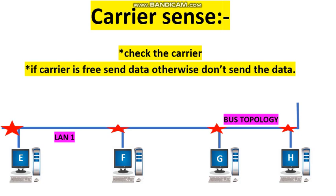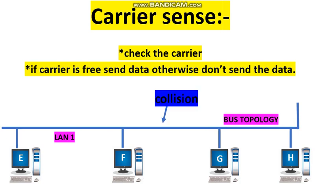For example, let us assume that E is your house and the lines attached to E indicate roads. You can see the traffic on the road only to some extent. In the same way, station E cannot sense the total carrier. At time 4 o'clock, station E senses the carrier, finds it free, and tries to send data to station G.